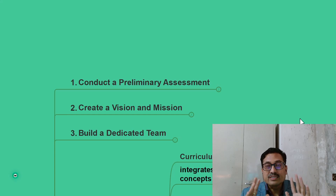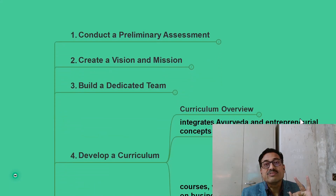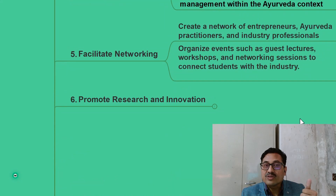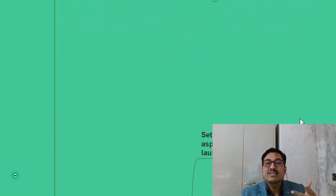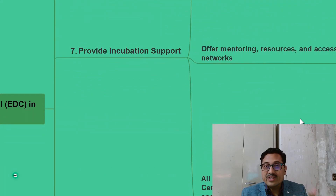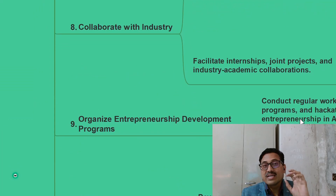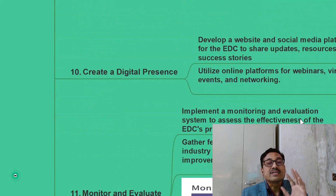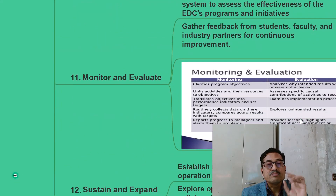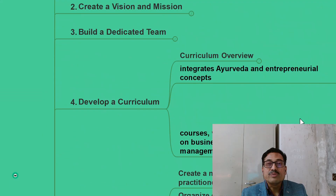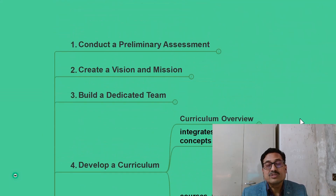The 12 steps are: first, conduct a preliminary assessment; then create a vision and mission; then build a dedicated team; then develop a curriculum; facilitate networking; promote research and innovation and provide incubation support; then collaborate with industry; organize entrepreneurship development programs; create a digital presence; then monitor and evaluate; and finally sustain and expand. These are the 12 steps which will guide you to develop an entrepreneurial development cell in your own institution.